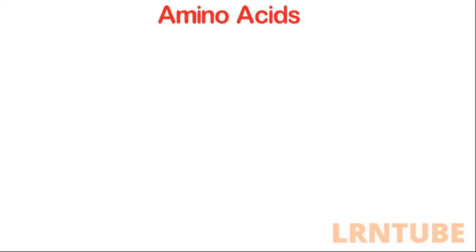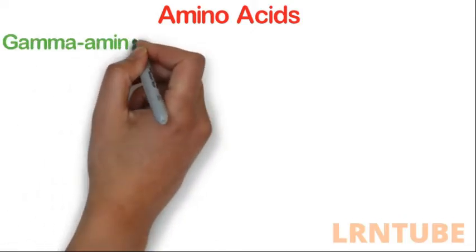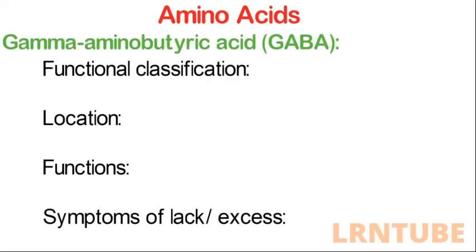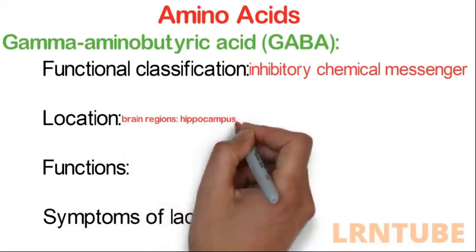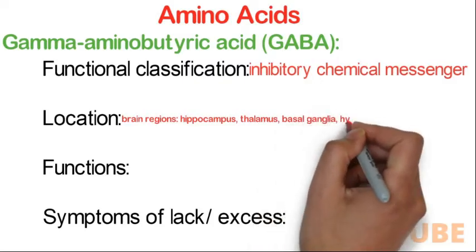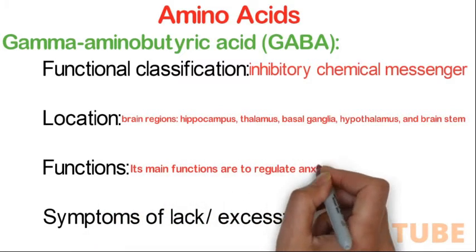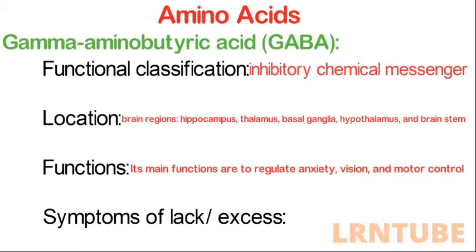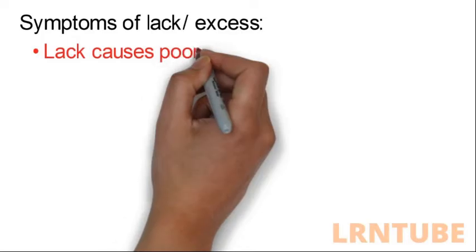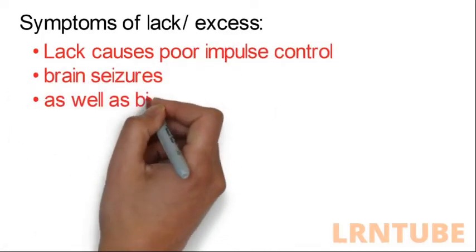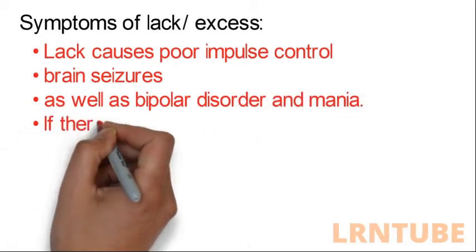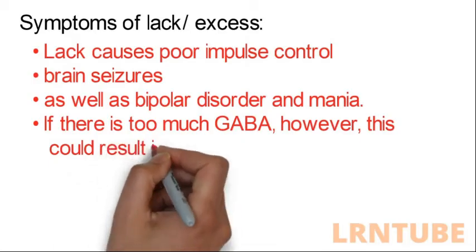Under amino acids we have GABA (gamma-aminobutyric acid) and glutamate. GABA is an inhibitory chemical messenger located in brain regions including the hippocampus, thalamus, basal ganglia, hypothalamus, and brain stem. Its main functions are to regulate anxiety, vision, and muscle control. A lack of GABA can cause poor impulse control, brain seizures, bipolar disorder, and mania. Too much GABA can result in hypersomnia and a lack of energy.